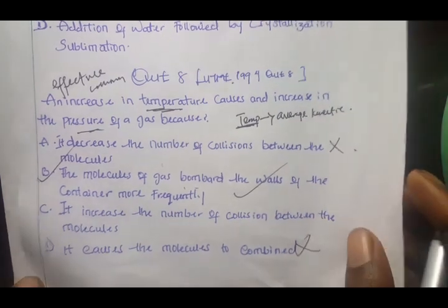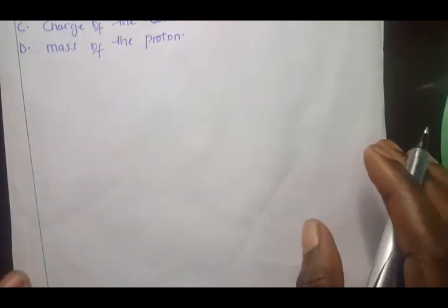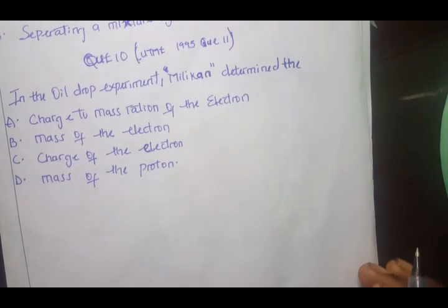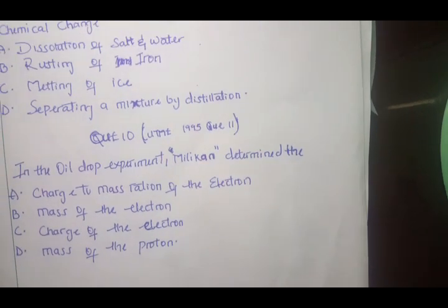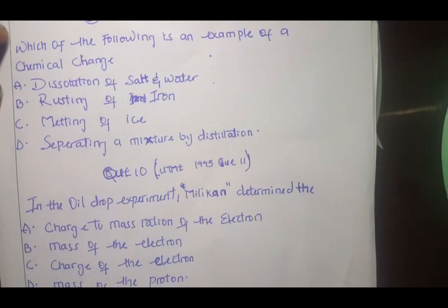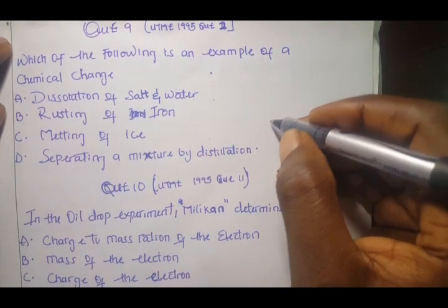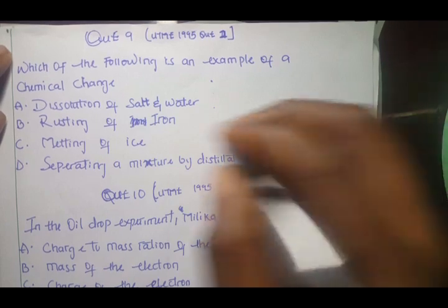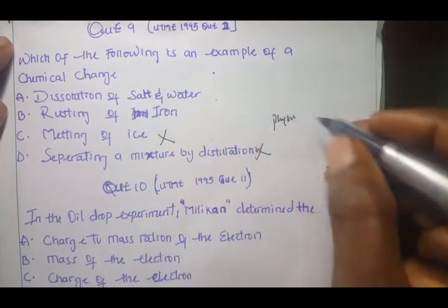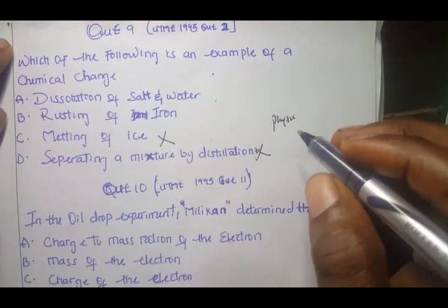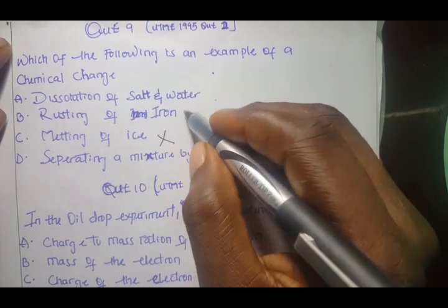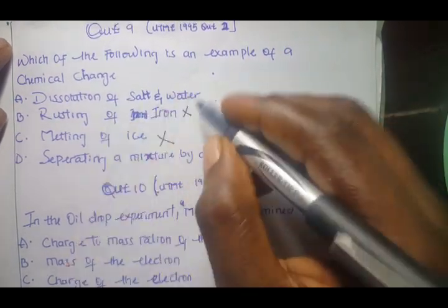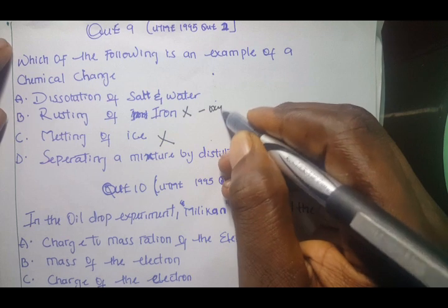Question 9, which of the following is an example of chemical change? This is very very simple. All physical or separation techniques are physical changes. Sublimation, distillation are always counted as they don't lead to formation of new substance. Rusting is a physical change because although iron rusts in the presence of oxygen and moisture, when iron rusts they don't give you new substance, they only change color.